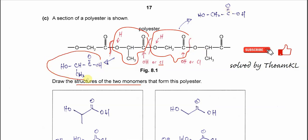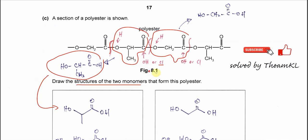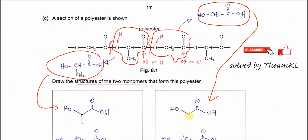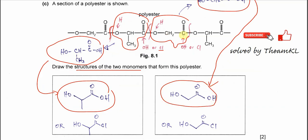The first monomer can be drawn as a skeleton structure. The second monomer is HOCH₂COOH. You can draw the skeleton structure for both. Alternatively, you may substitute Cl for OH on the carboxylic acid to give the acyl chloride form — that is also acceptable. These are the two monomers that form this polyester.